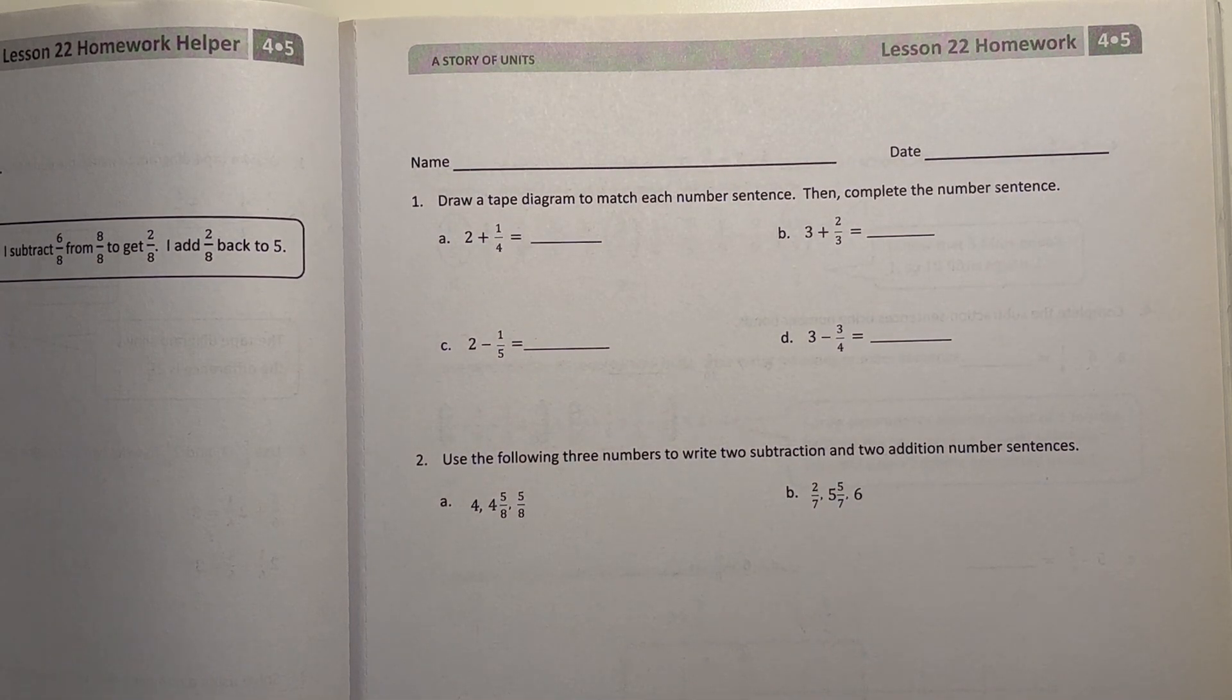Number one, draw a tape diagram to match each number sentence, then complete the number sentence. All right, so first we have 2 plus 1 fourth. So our tape diagram, we're gonna first draw 2.